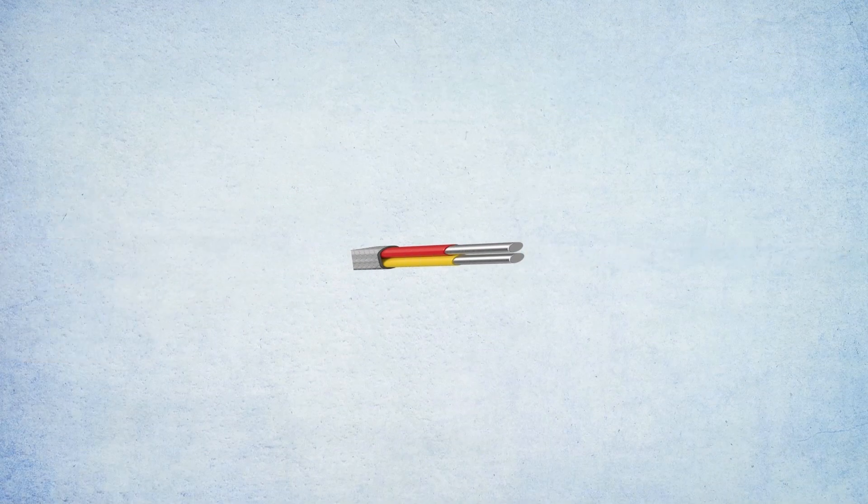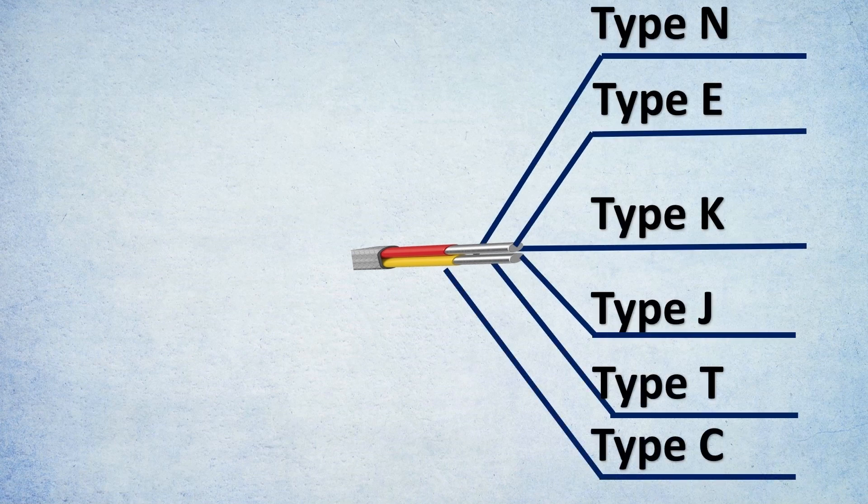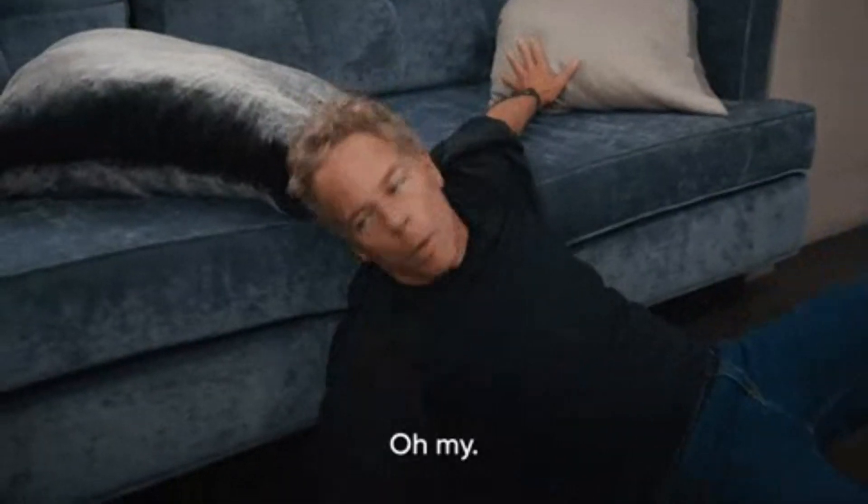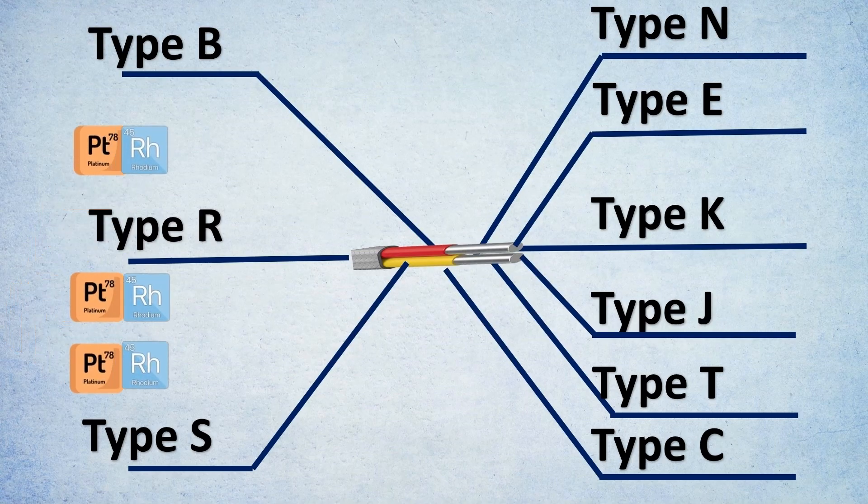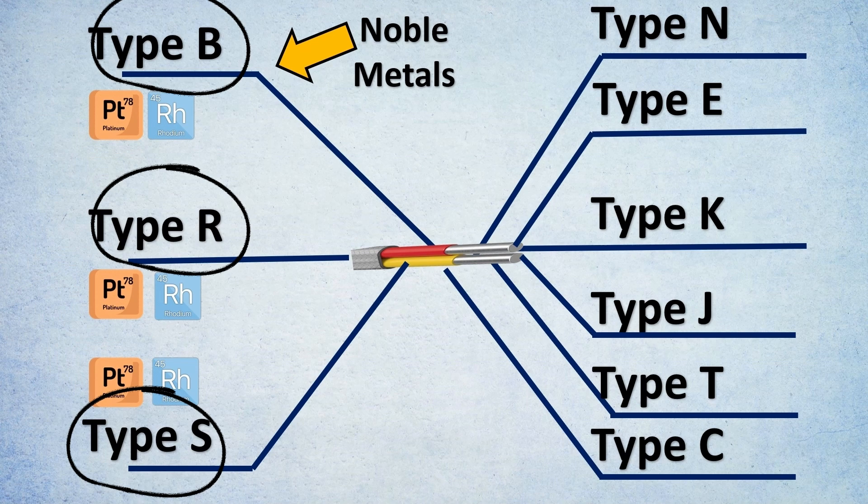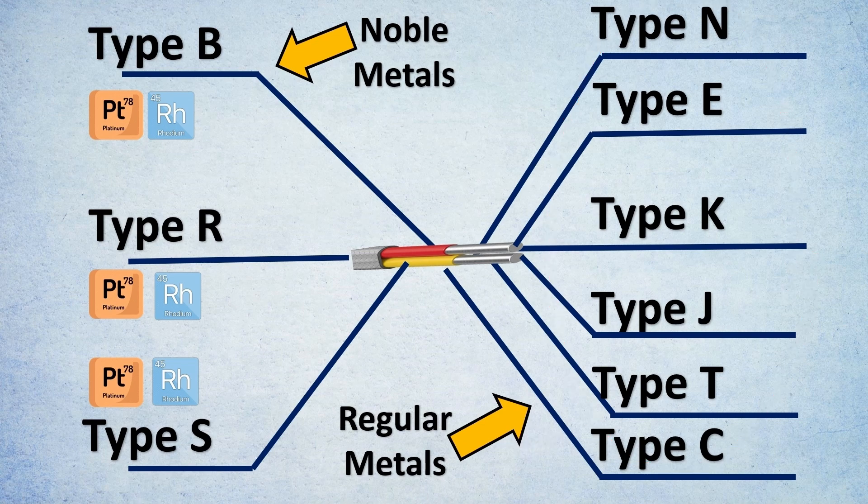Thermocouples can be divided into various types based on metal configuration. The most common is Type K, but you have many types like N, E, J, T, C, B, R, and S. Let's divide them: the three on the left (B, R, S) are made of noble metals like platinum and rhodium in different proportions and configurations. These are preferred only when other regular metals are not applicable.